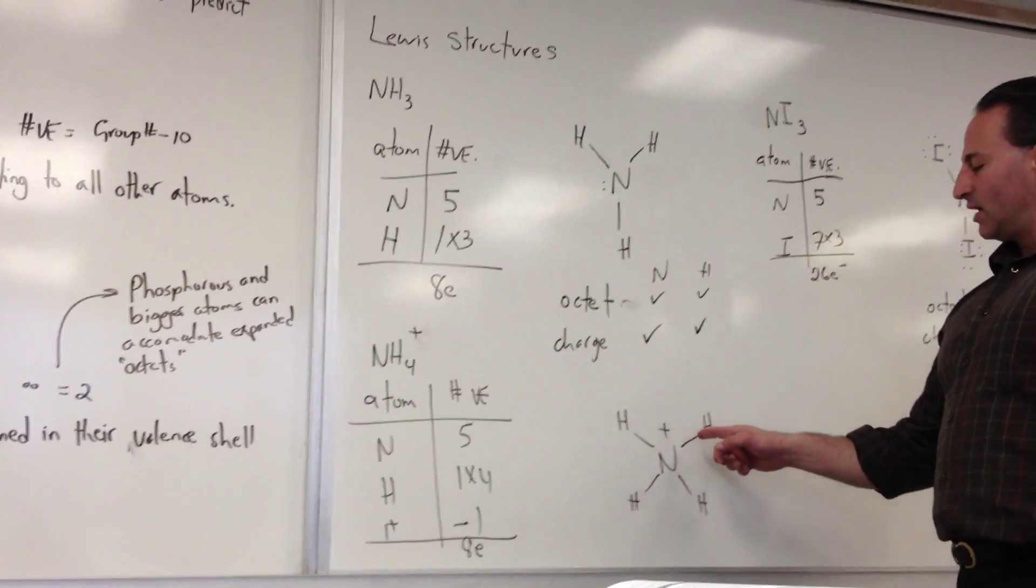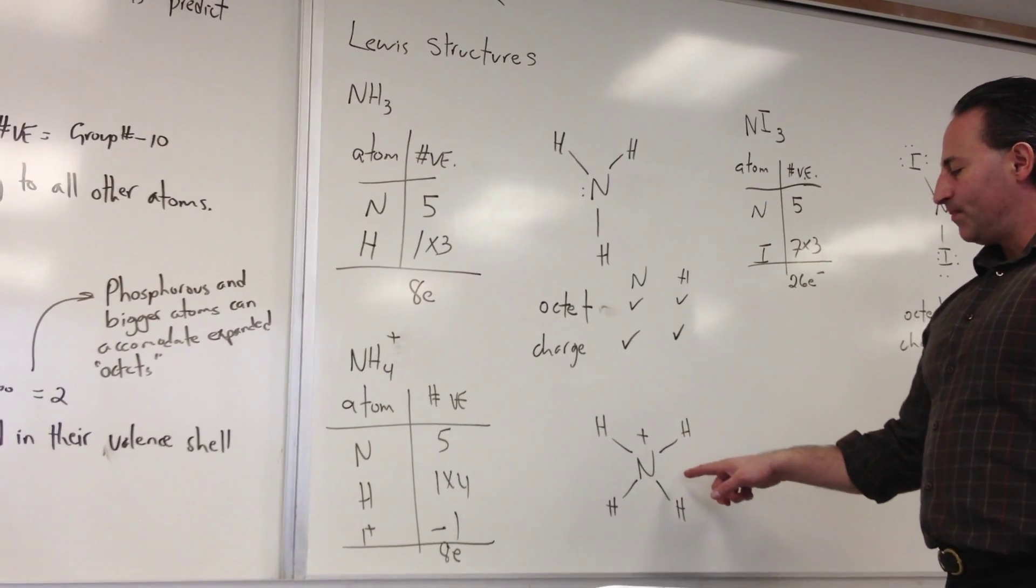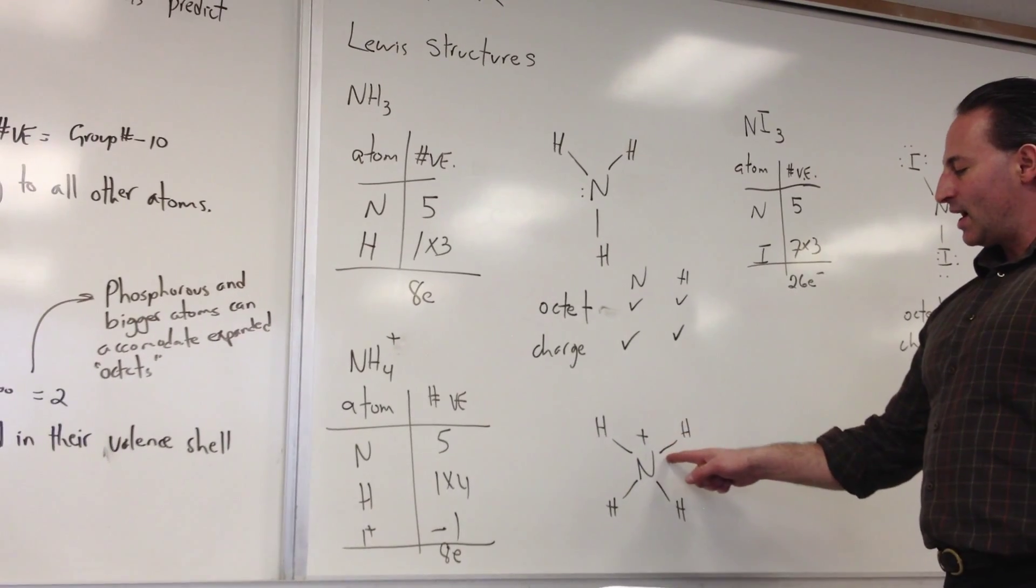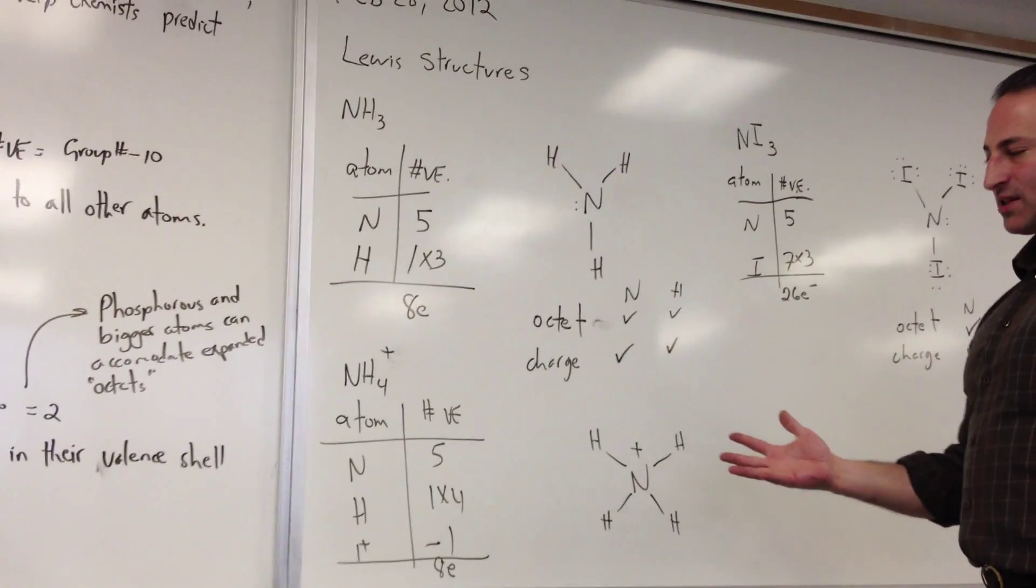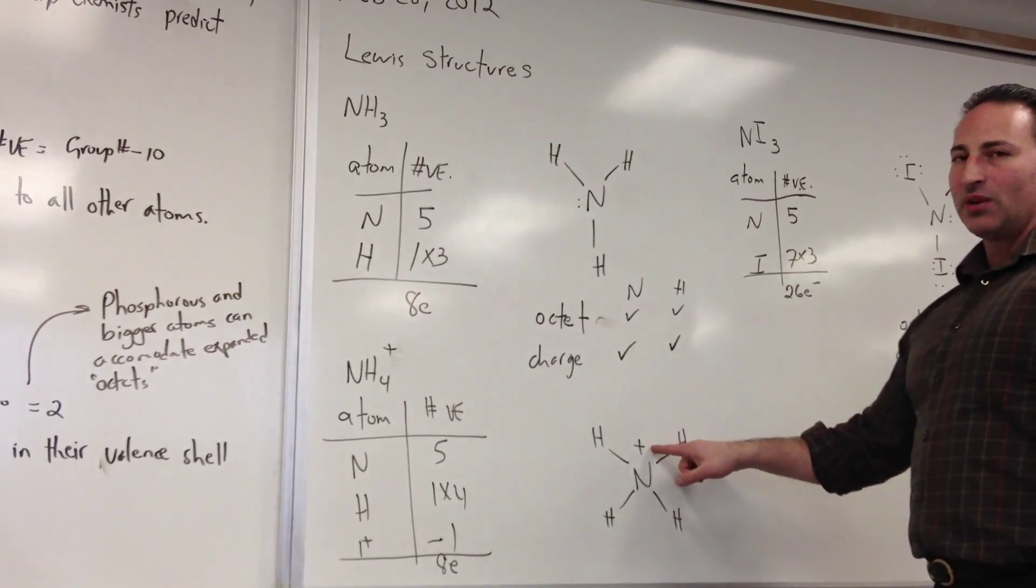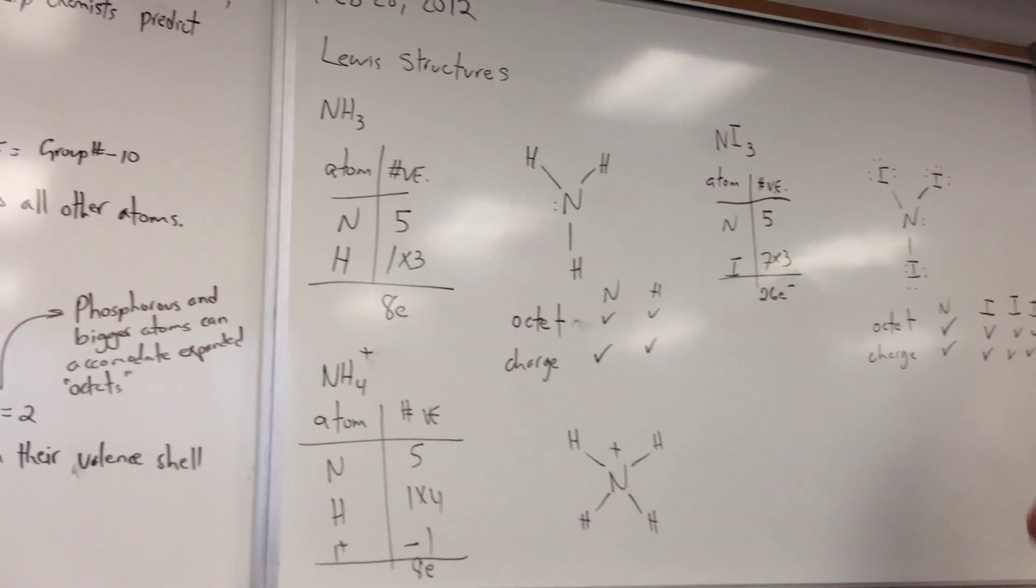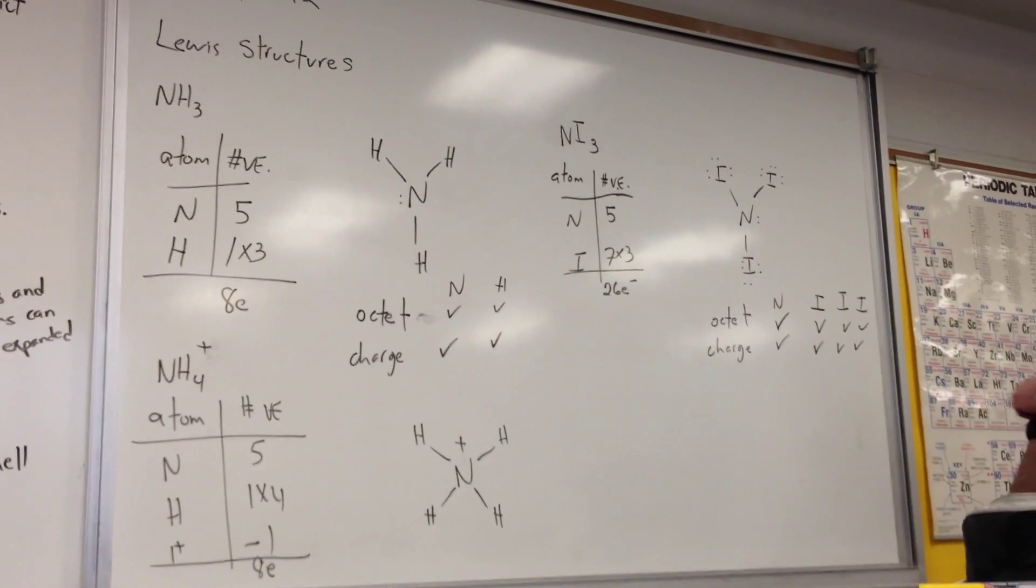When you draw it up, you'll see that there are 4 lines going to nitrogen. So nitrogen has a fulfilled octet, but only has 4 out of the 5 electrons that it wants in its valence shell. So it will have a formal charge of +1. All the hydrogens are fine.